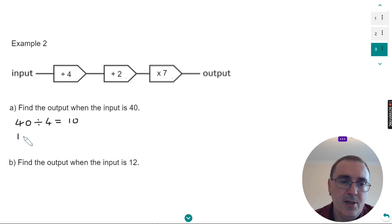Copy 10 to the next line. The next operation is to add two. So 10 add two is 12. Then put 12 on the next line.